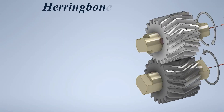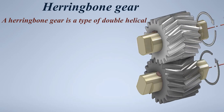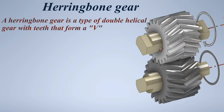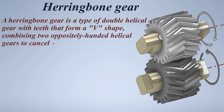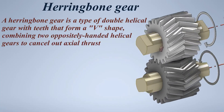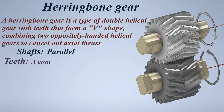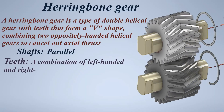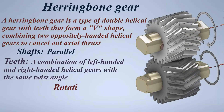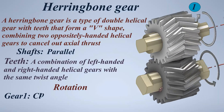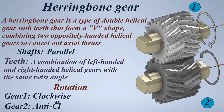Herringbone gear. A herringbone gear is a type of double helical gear with teeth that form a V shape, combining two oppositely handed helical gears to cancel out axial thrust. Shafts: parallel. Teeth: a combination of left-handed and right-handed helical gears with the same twist angle. Rotation — Gear 1: clockwise, Gear 2: anticlockwise.